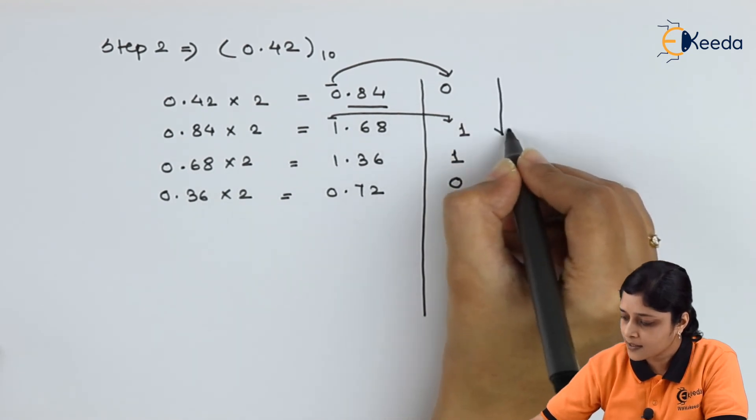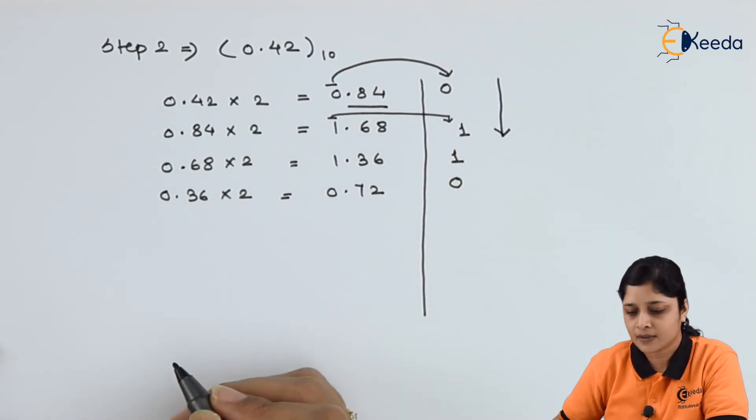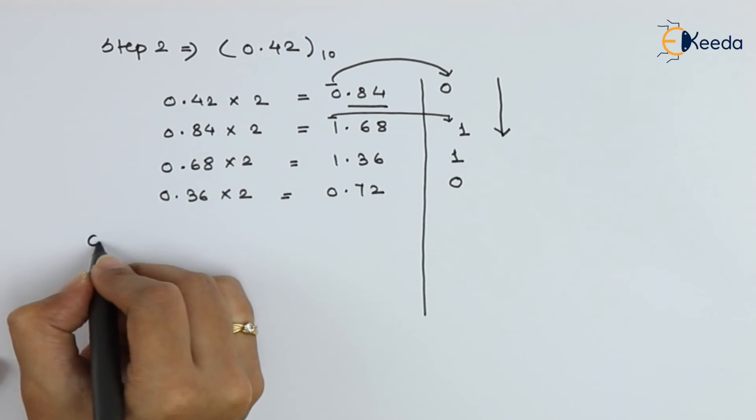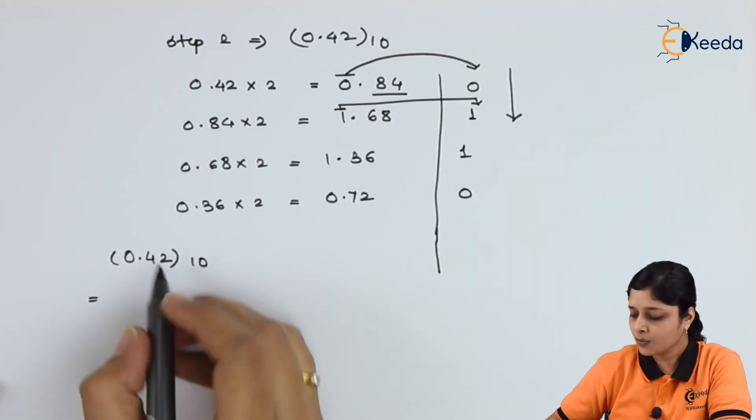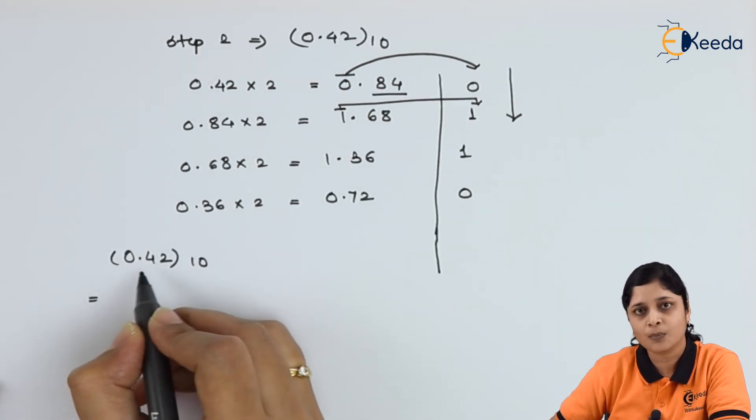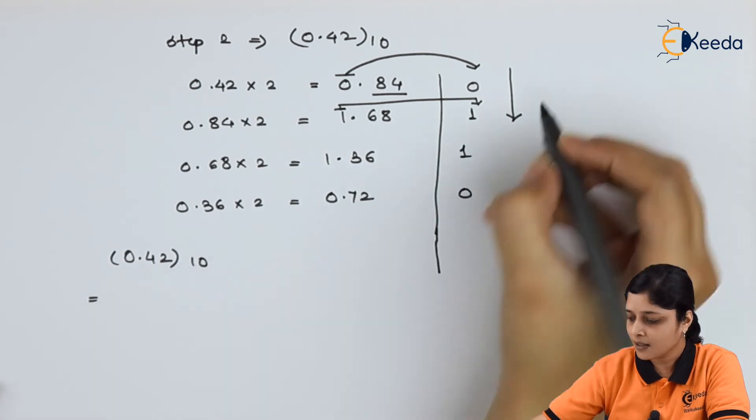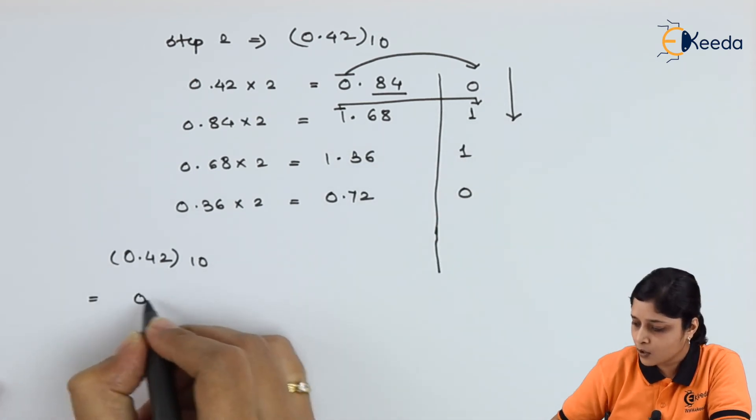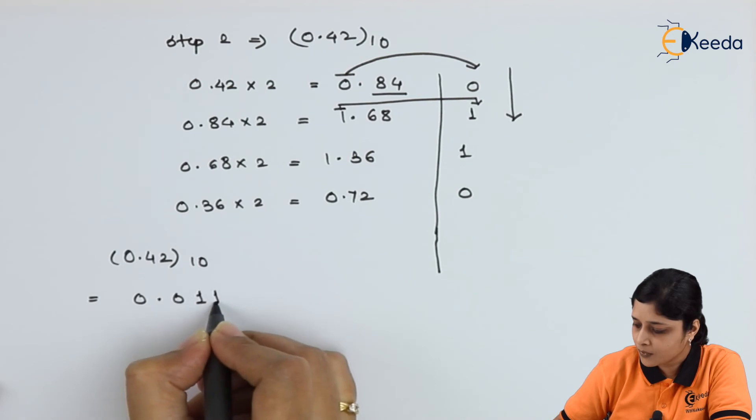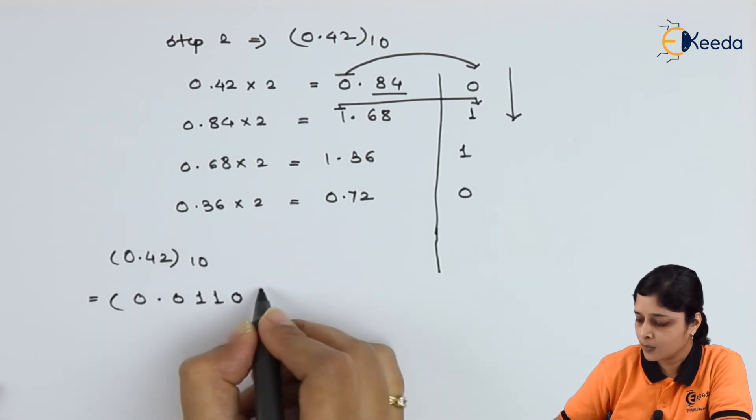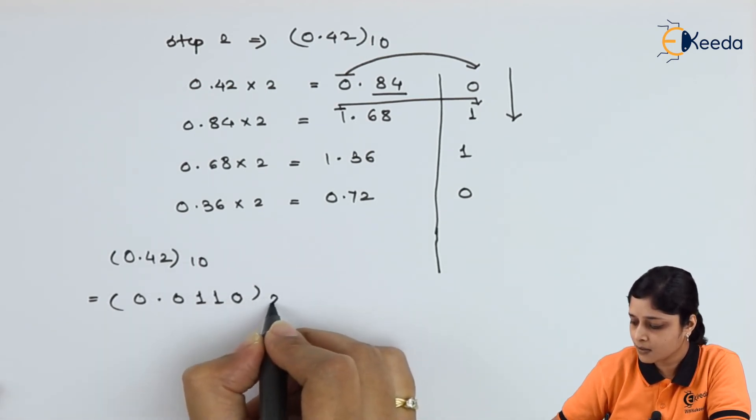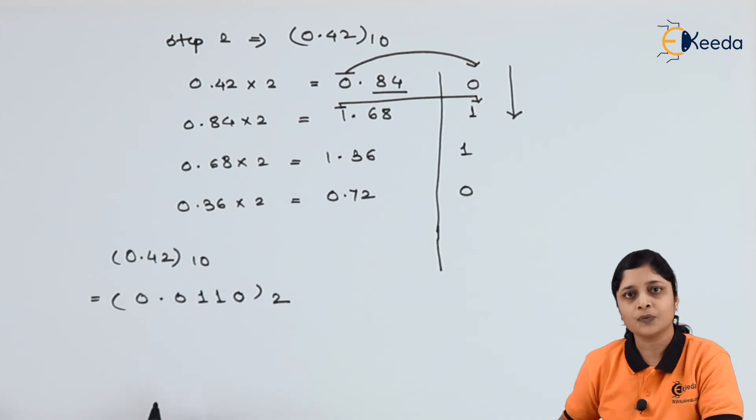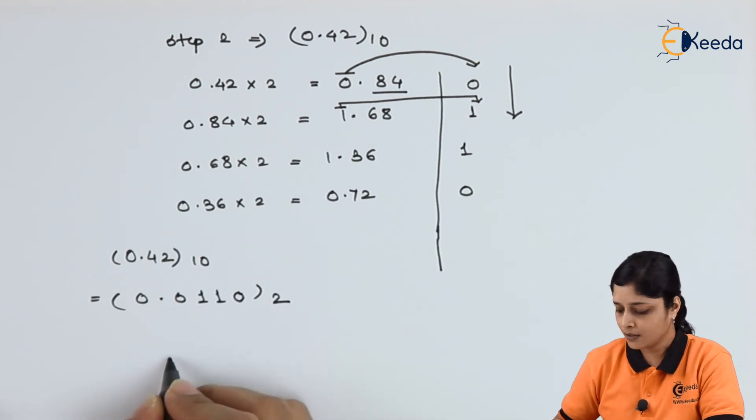Again draw this arrow to write down final answer. So final answer for 0.42 to the base 10 is 0.0110 to the base 2.